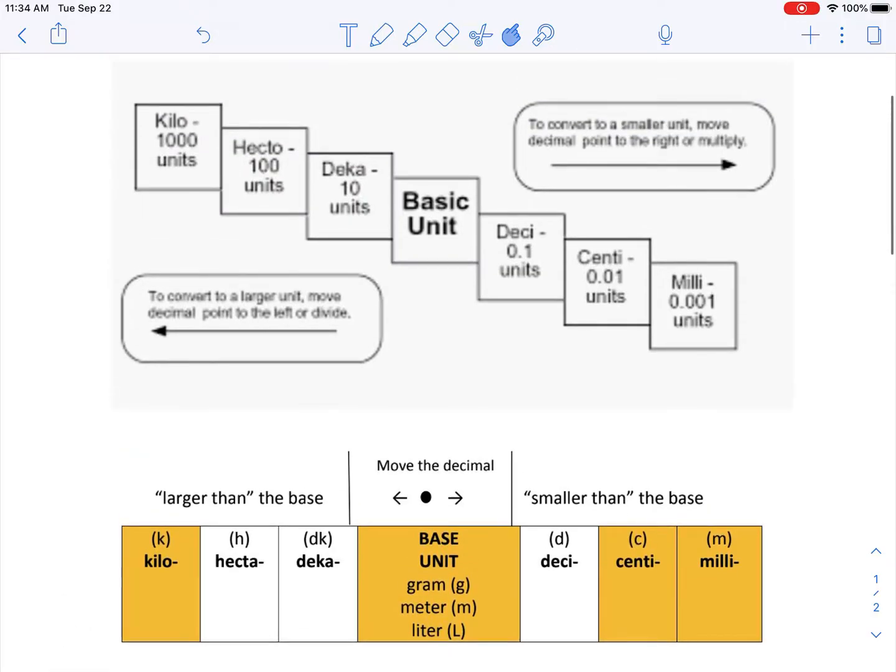But in each case, they give you the prefix of the metric prefix. So for example, all the way to the left, you have your K for kilo. Kilo represents 1,000 units. Then all the way towards the right, the bottom right, moves all the way down to M, which stands for milli.